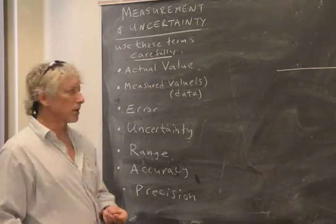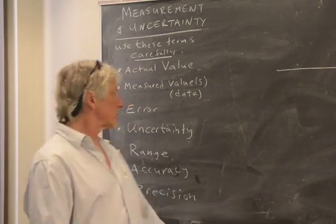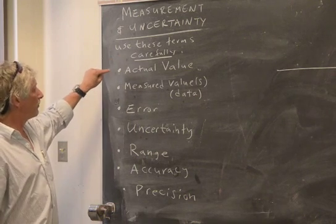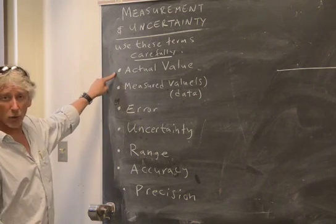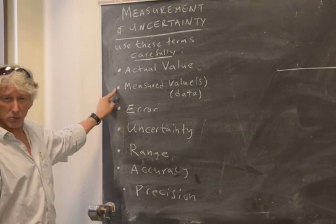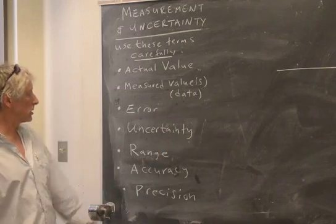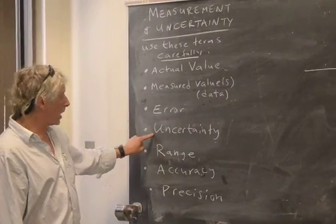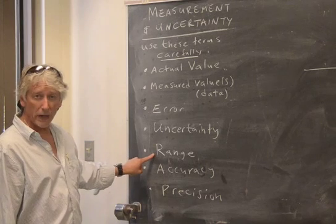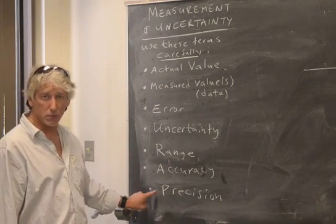I will warn you that these terms are often used in a kind of muddled way. Even in textbooks they can be used incorrectly. So it's not hard. The terms you should write down are: the actual value that you're looking for, the measured values that you get from your experiments, the data, your measurements, error, uncertainty, the range of values, and then we'll discuss accuracy versus precision.